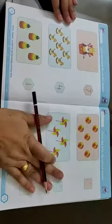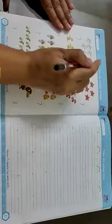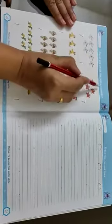All the kids have done wonderfully. Now this is the homework for today: count and circle the correct number.